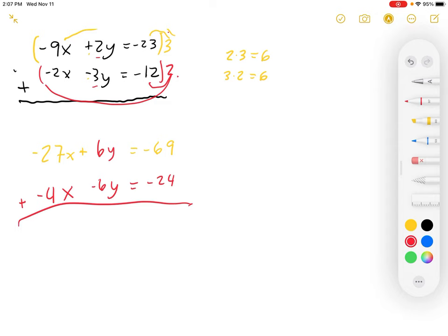Add them together. That gives us negative 31x plus 0y equals negative 93, I think. Double check that with the calculator. No, no, that should work out good.